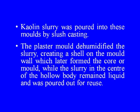He started his considerations with experiments on a transfer of the slip casting process developed for the manufacture of ceramic products, which led to a patent in 1936. This process used a split plaster mold of the object to be cast to produce hollow bodies. Kaolin slurry was poured into these molds by slush casting. The plaster mold dehumidified the slurry, creating a shell on the mold wall which later formed the core or mold, while the slurry in the center remained liquid and was poured out for reuse.